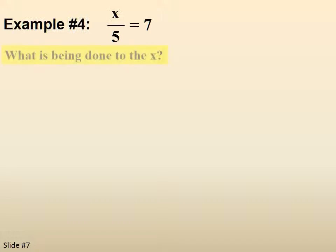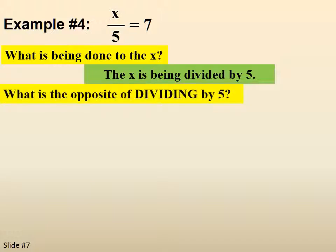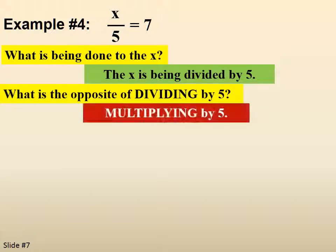x over 5 equals 7. What is being done to the x? The x is being divided by 5. The opposite of dividing by 5, multiplying by 5.